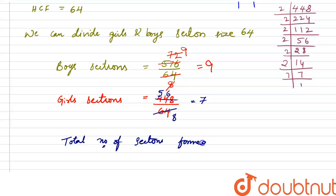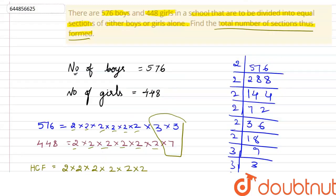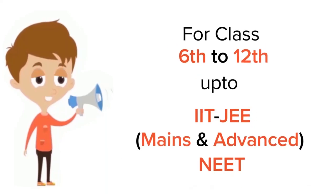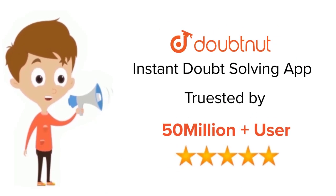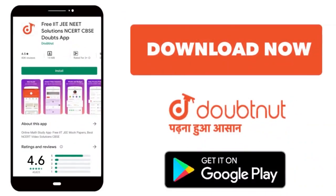Therefore, the total number of sections formed = 9 + 7 = 16. The answer is 16 sections. For Class 6 to 12, for both IIT-JEE and NEET level, trusted by more than 5 crore students — download Doubtnet today.